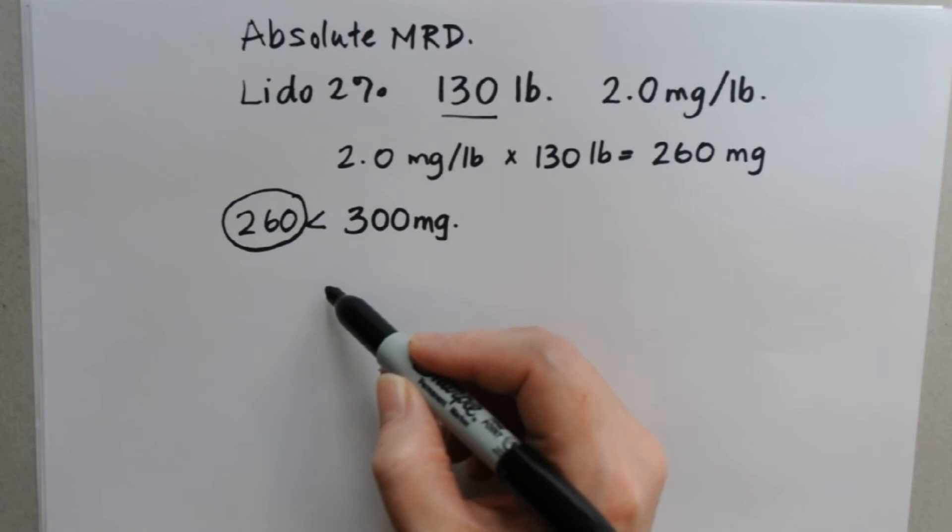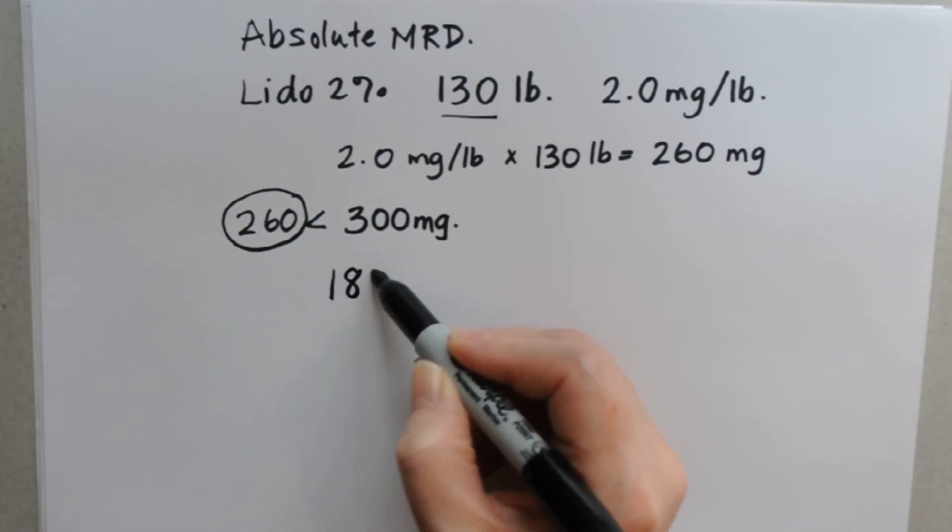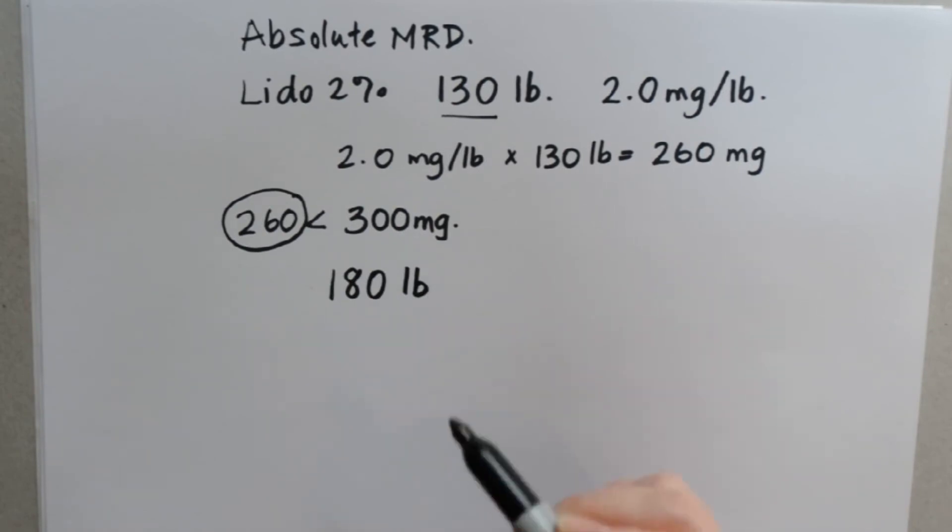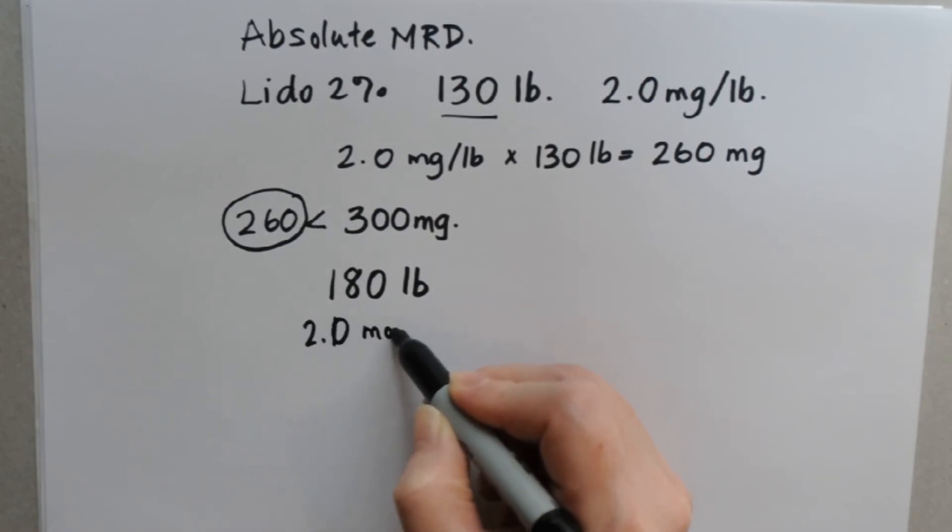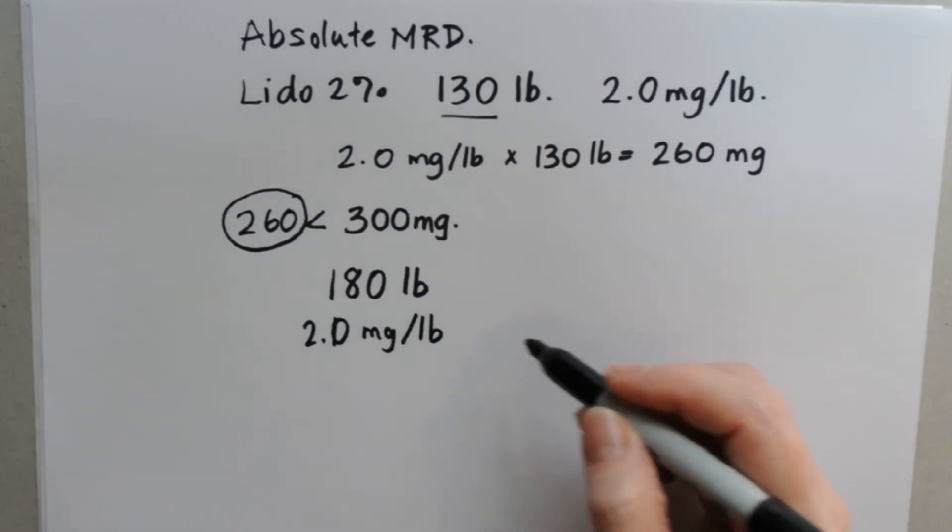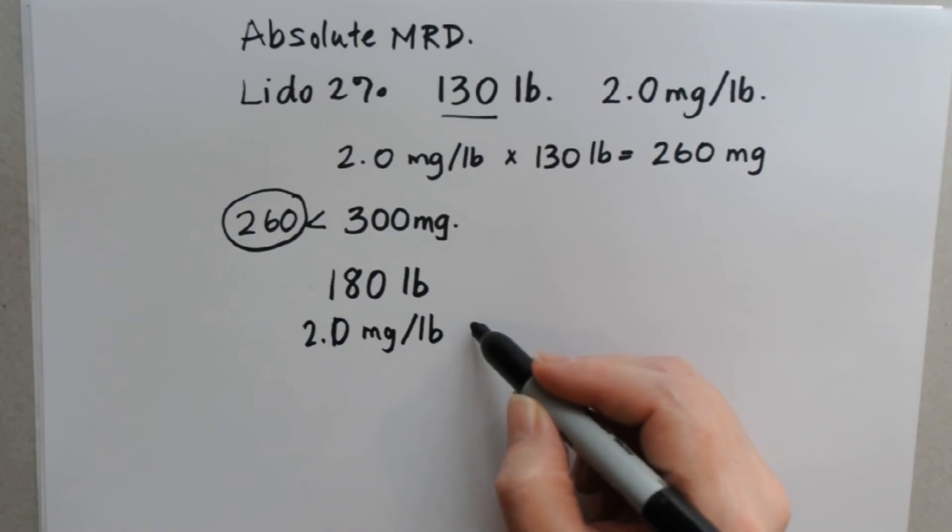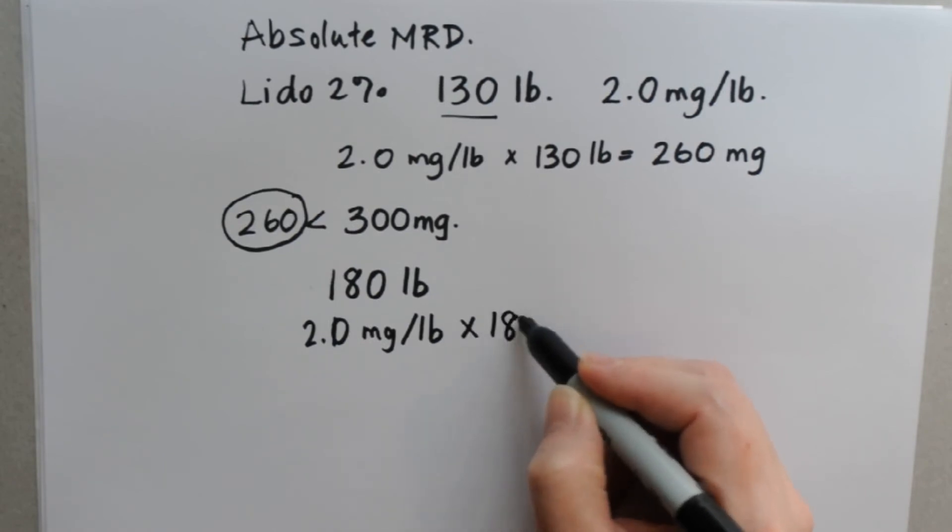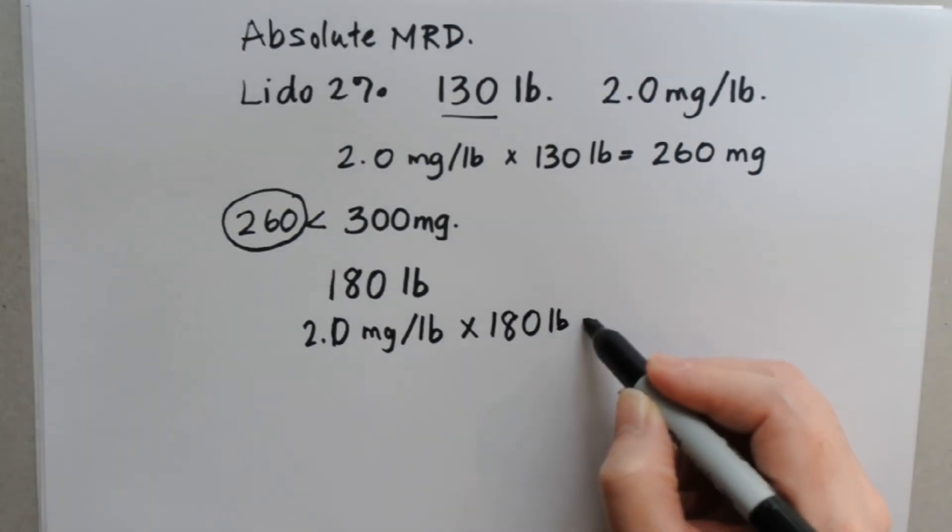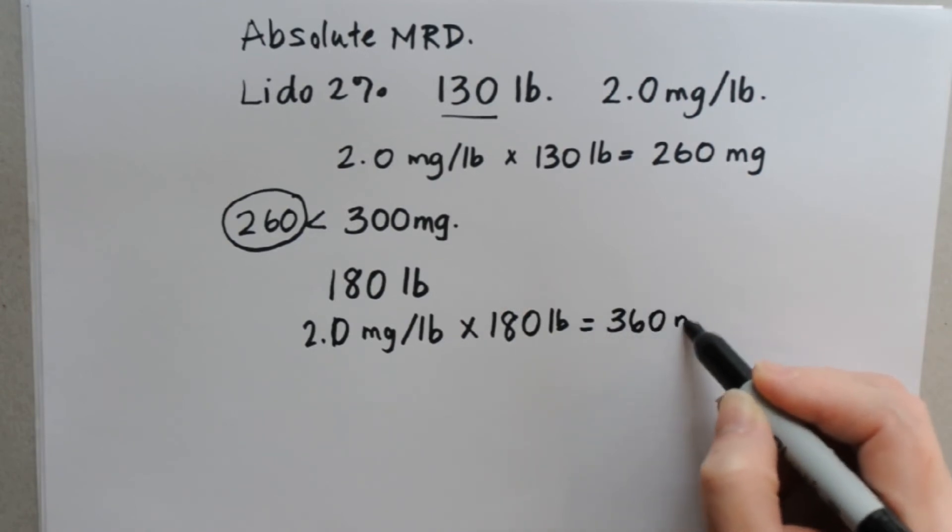So let's continue and see what happens when we change the weight. Let's say we've got a 180-pound person. To figure out their maximum dose, we're again going to do 2.0 milligrams per pound, and that's because we're working with Lido still. And they are 180 pounds, which gives us 360 milligrams.